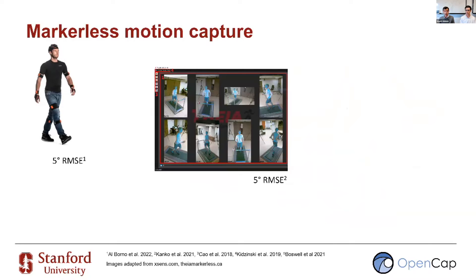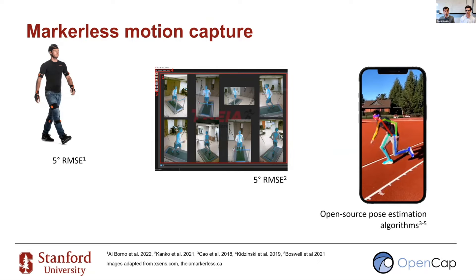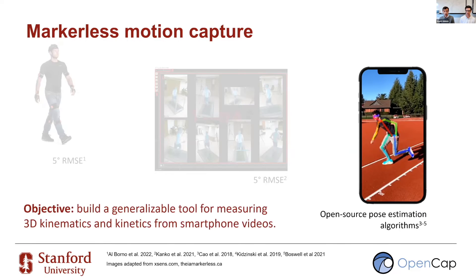Several simple tools exist for accurately measuring kinematic data like joint angles. For instance, inertial measurement units or commercial markerless motion capture systems can measure joint angles with about five degrees of error. Another potentially very scalable technique is using open-source pose estimation algorithms on smartphone videos to estimate key points on the human body, such as the position of joints. These key points have been used as input to deep learning models to predict task-specific biomechanical quantities. However, this approach isn't generalizable enough to replicate the motion capture lab, which motivated us to develop OpenCAP — a generalizable tool to estimate 3D human movement kinematics and dynamics from smartphone videos.